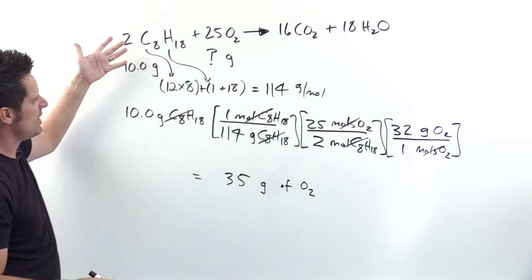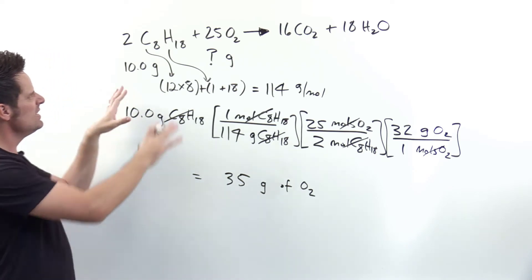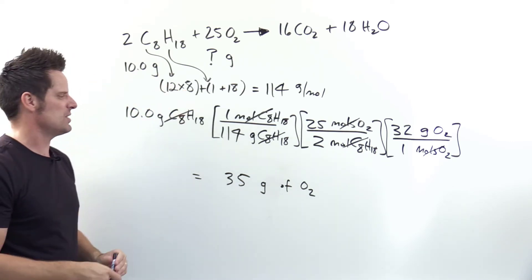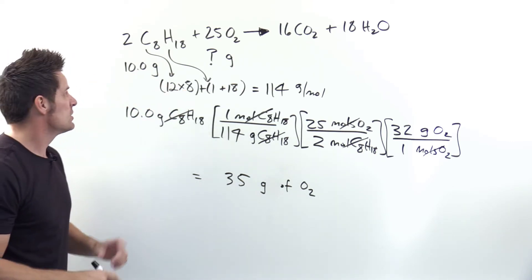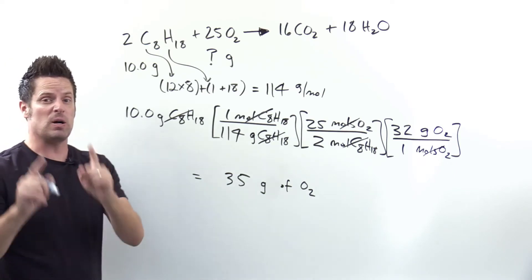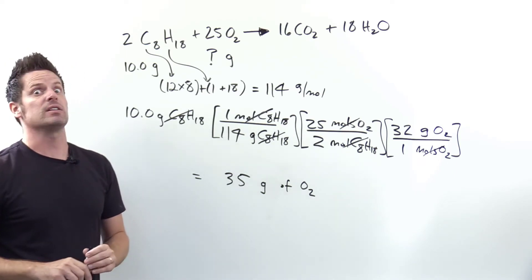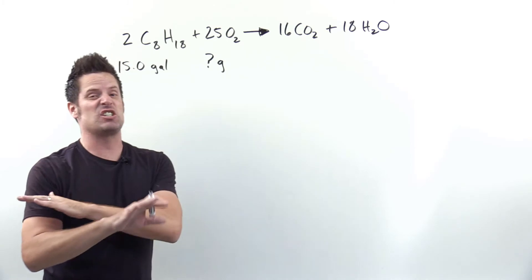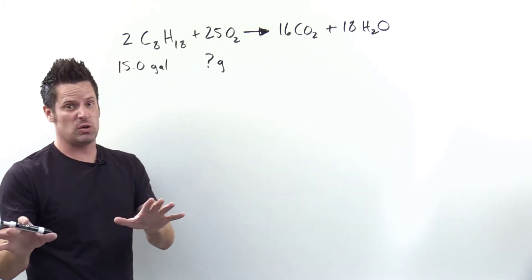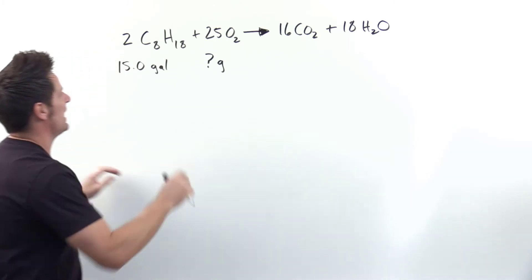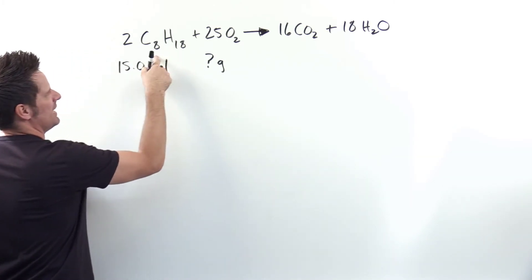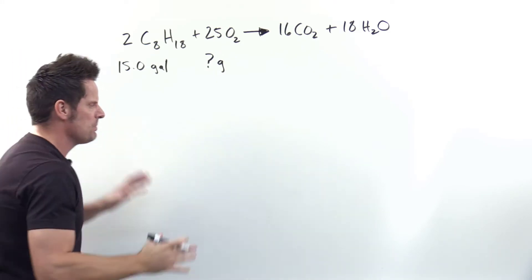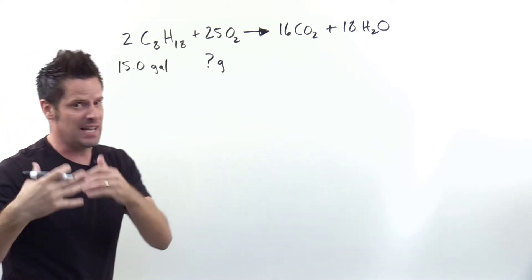So for 10 grams of octane, you need 35 grams of O2 — that feels about right looking at the ratios. That is the answer to Part B. Now let's move on to Part C, which is as complicated as you're ever going to see on one of these questions. I have 15 gallons of octane — how many grams of O2 do I need?